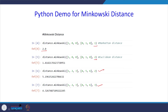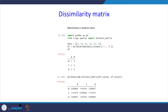Now let us find the dissimilarity or distance matrix. Import pandas as pd and from scipy.spatial import distance_matrix. Define data with 3 points: [1, 4], [2, 5], [3, 6] — three observations for two variables a and b. Create a DataFrame df. Then use pd.DataFrame(distance_matrix(df.values, df.values)) to get the distance matrix. The result shows: distance between 0 and 0 is 0, between 1 and 0 is 1.41, and between 2 and 0 is 2.82.